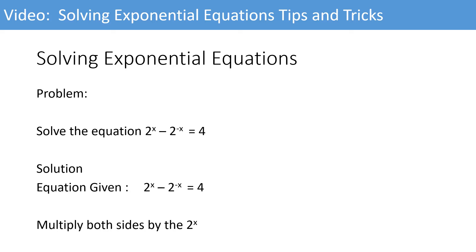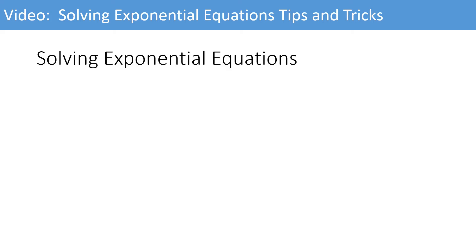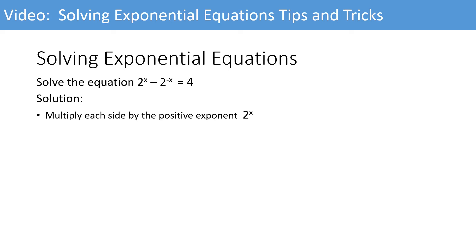Now, let's multiply both sides by 2 to the exponent x. We'll multiply each side by the positive exponent 2 to the exponent x. If you multiply the same value to the left side and the right side, you are not changing the overall value of the question — you are just making it easier to solve. That's the trick.